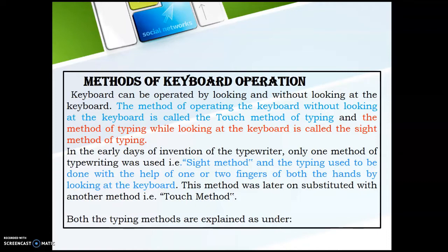The method of operating the keyboard without looking at the keyboard is called the touch method of typing. The method of typing while looking at the keyboard is called the sight method of typing. So mainly two methods of typing exist: one is the sight method, another one is the touch method.